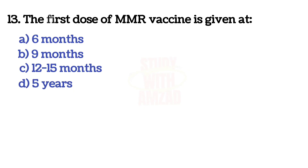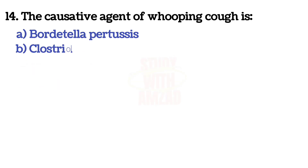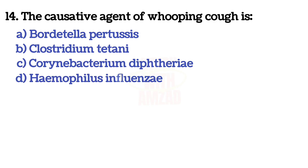Next question: The first dose of MMR vaccine is given at? The answer is C — 12 to 15 months. Next question: The causative agent of whooping cough is? The answer is A — Bordetella pertussis.